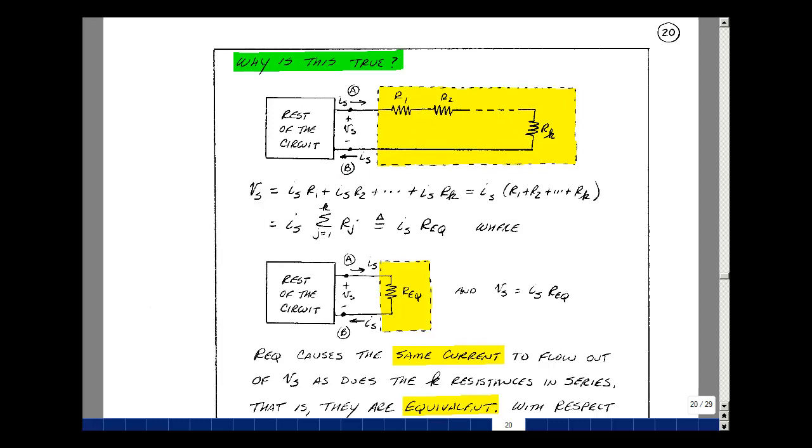So let's do Kirchhoff's voltage law. The current I sub s flows in R1. Drop across R1 is I sub s times R1. The drop across R2 is also I sub s, and now times R2. And that same current will flow through R sub k.